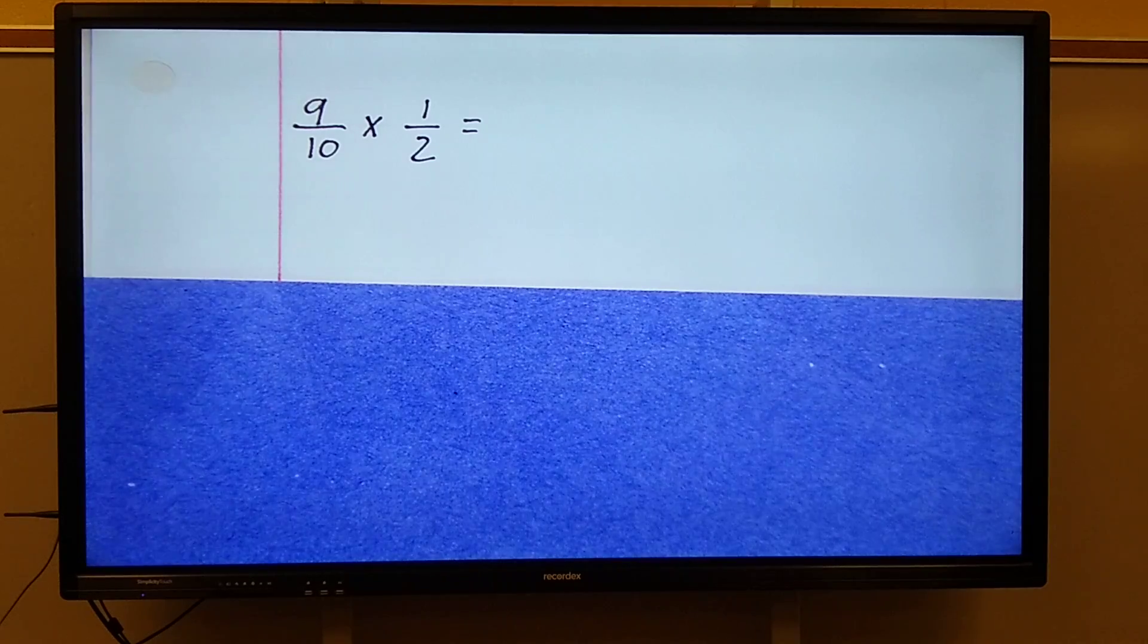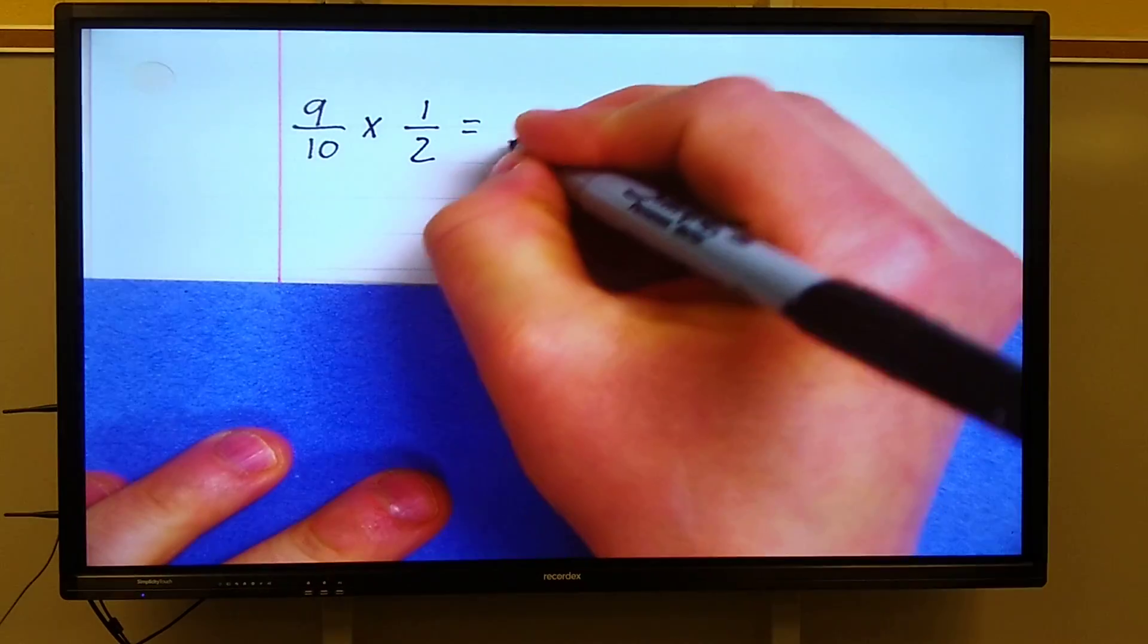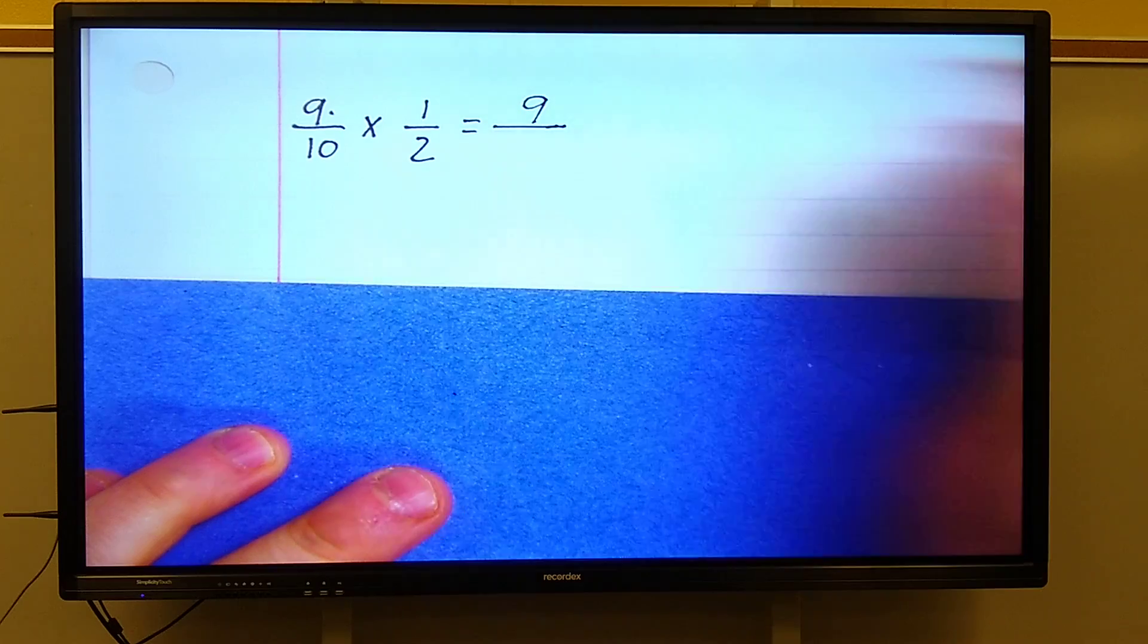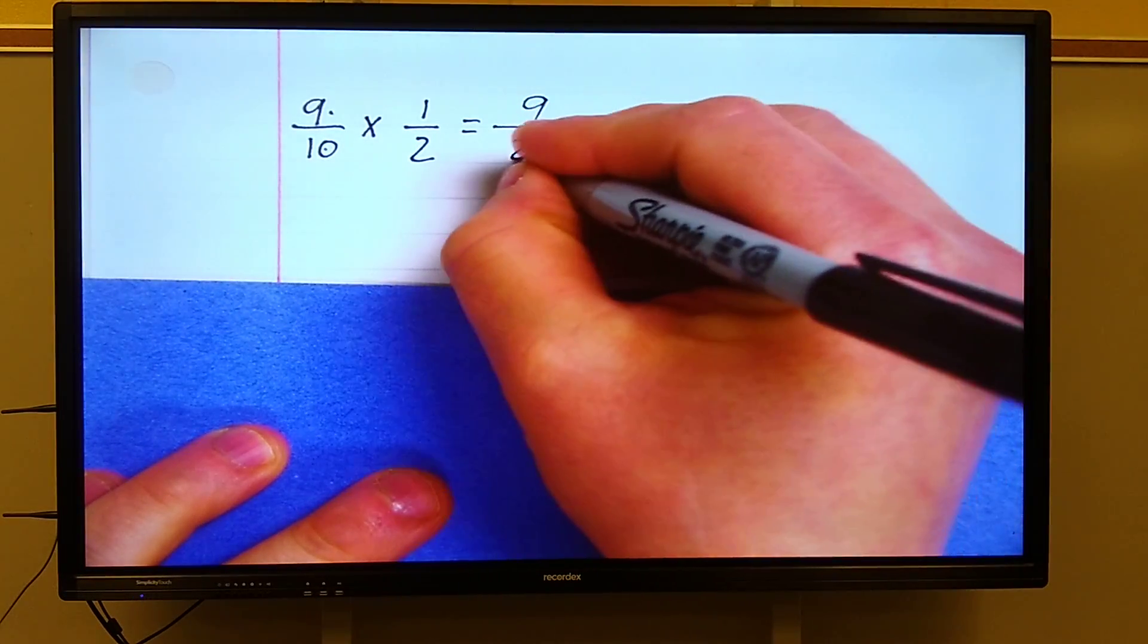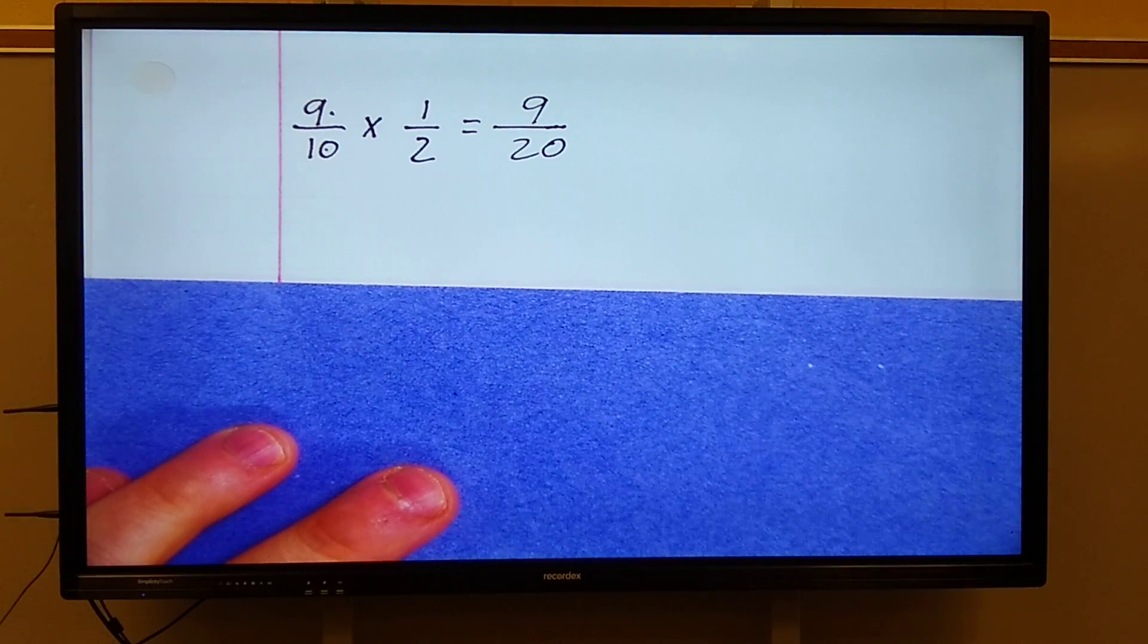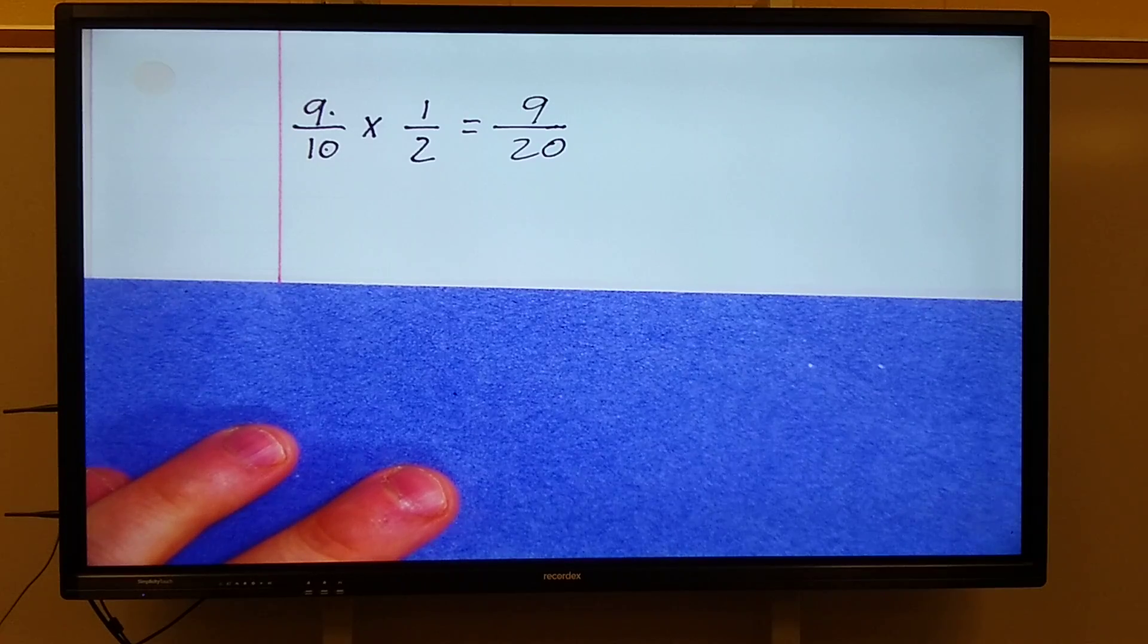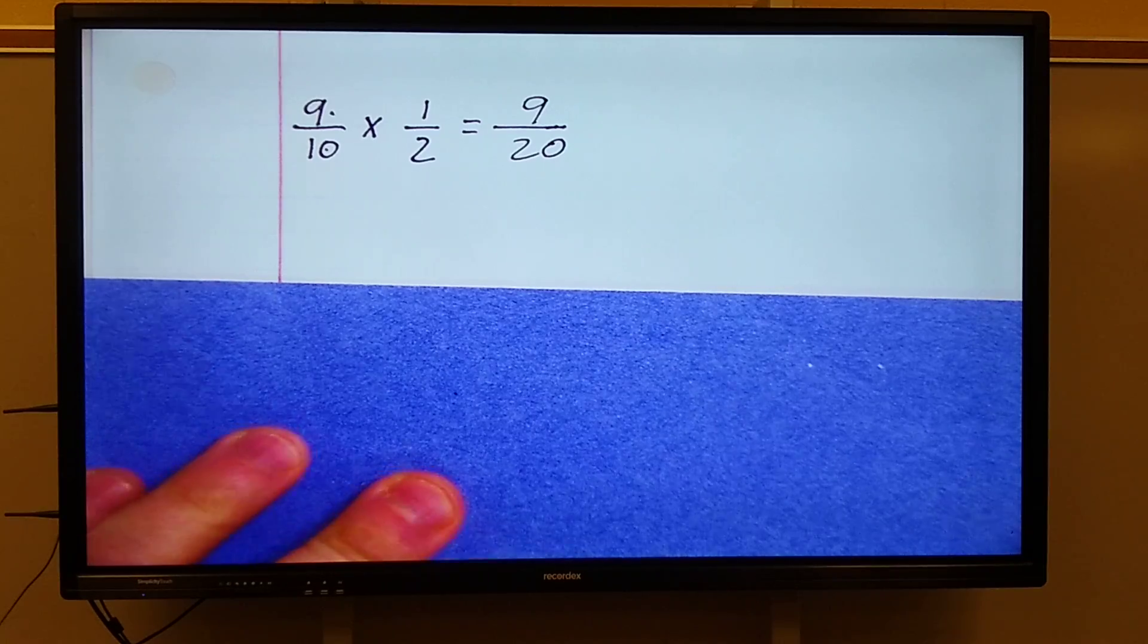Alright, let's see how wonderful you did. Numerator times numerator, 9 times 1 is 9. Denominator times denominator, 10 times 2 is 20. Ask yourself the two questions: Is it an improper fraction? No. Is it in simplest form? Yes. 9/20 is the answer.